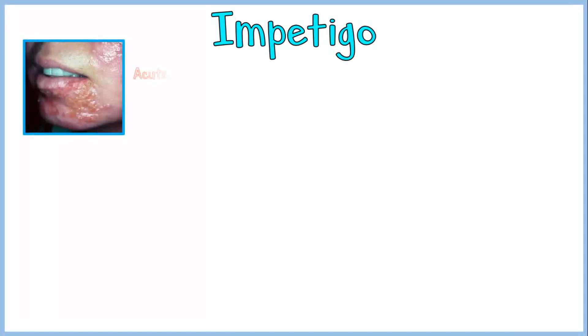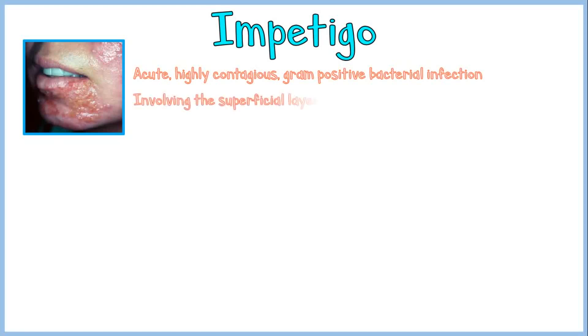Impetigo is an acute, highly contagious, gram-positive bacterial infection involving the superficial layers of the epidermis. It occurs most commonly in children; however, a person at any age can get impetigo.